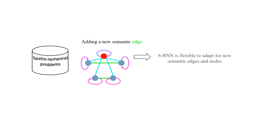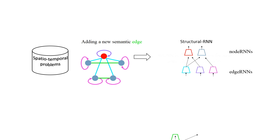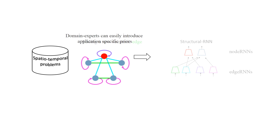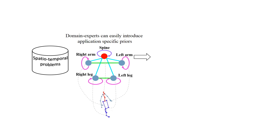At the same time, it gives the flexibility to introduce new components or interactions into the spatiotemporal graph. As the underlying spatiotemporal graph becomes complex, our architecture becomes richer to model the new interactions.